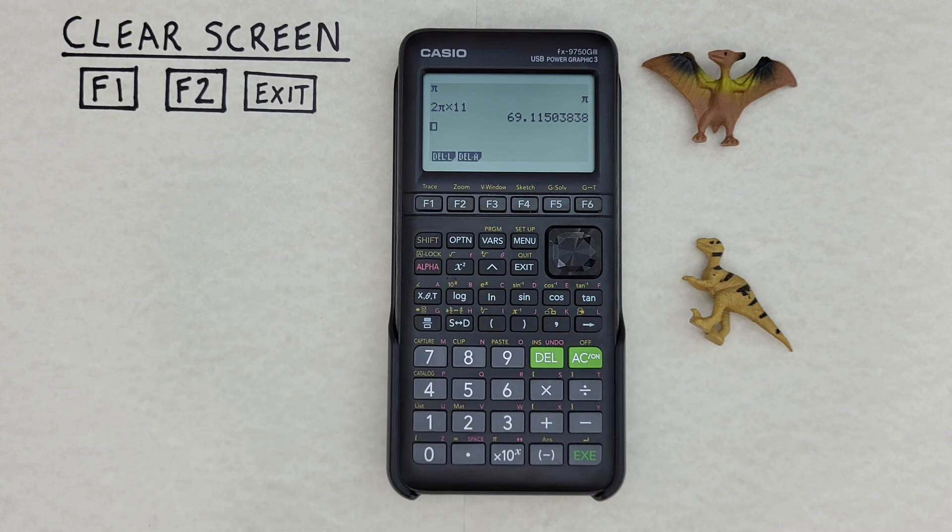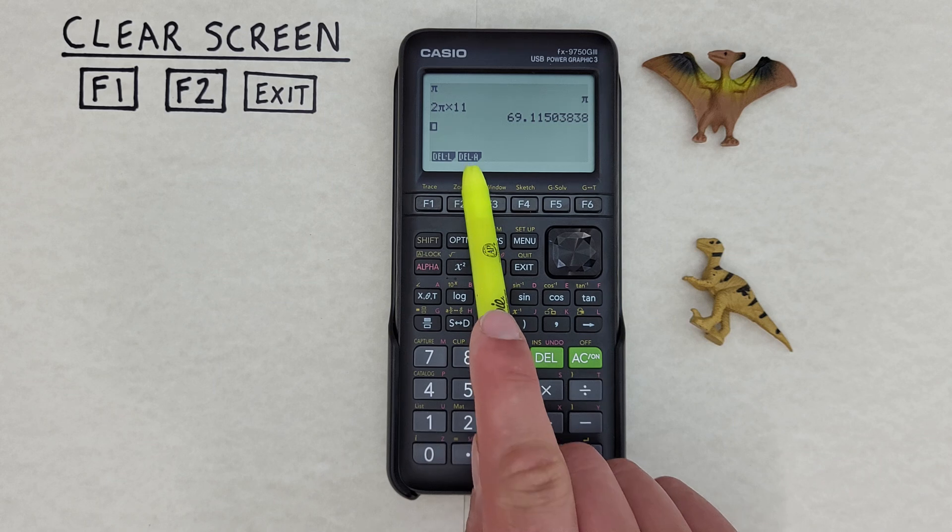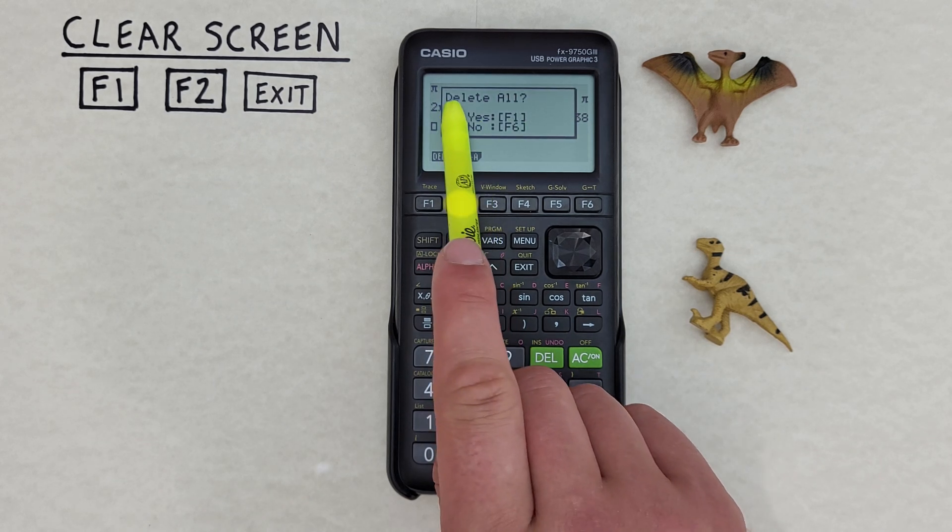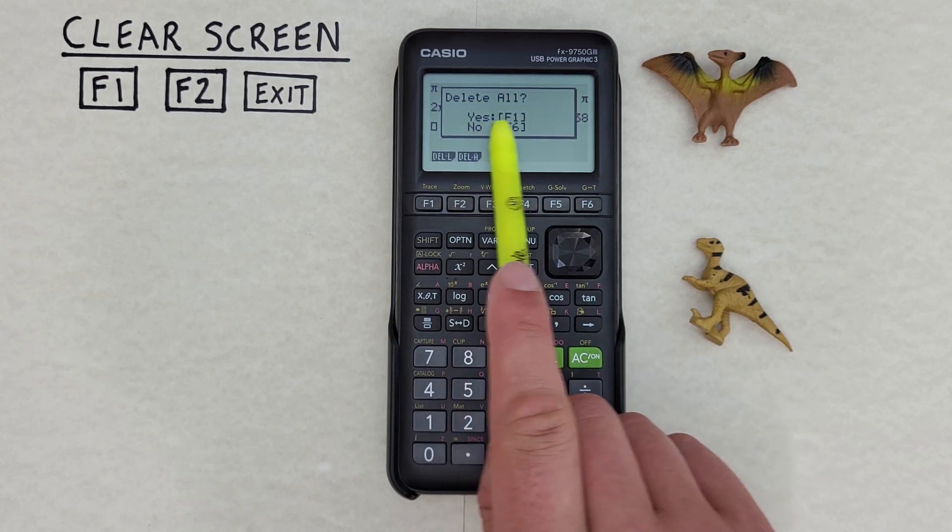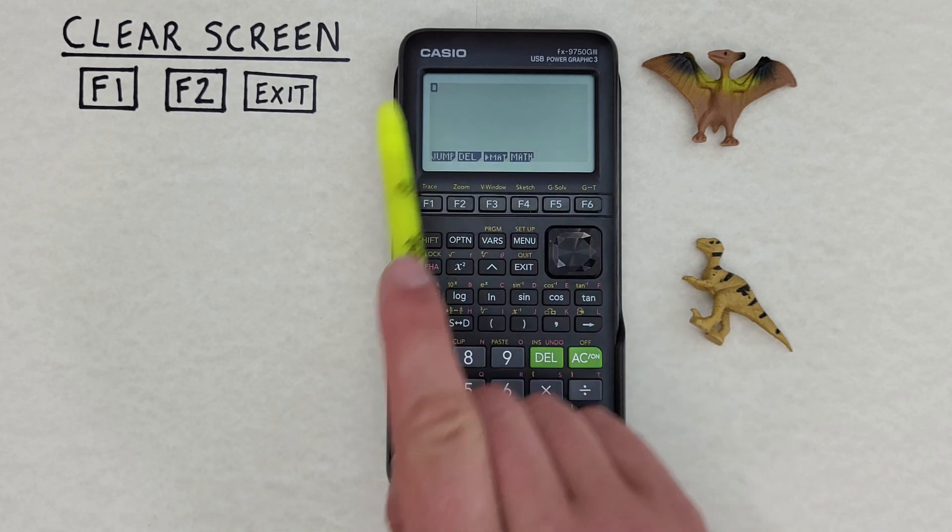If we want to clear the entire screen, we can use F2 for delete all. We press F2, it will ask to confirm, and we say yes by pressing F1. And there we go, our entire screen has been cleared.